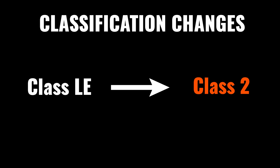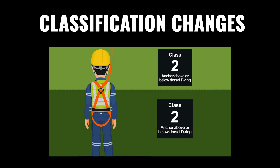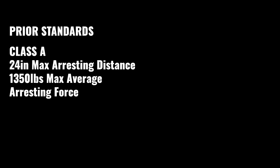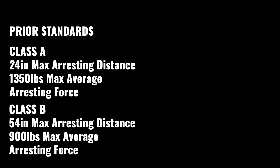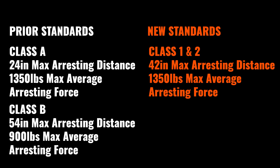Class 2 is formerly leading edge — for anchorage above or below your D-ring. The prior classes showed Class A with a 24-inch arresting distance and a maximum arresting force of 1,350 pounds, and Class B with a 54-inch arresting distance and 900 pounds arresting force or less. The arresting forces and arresting distance are now clearly labeled on the devices. The standard outlines maximum average arresting forces of 1,350 pounds and an arresting distance of 42 inches. However, manufacturers are now able to list their specific tested data directly on the manual, label, and all requirements. The maximum arresting distance allowed by the standard is a foot shorter than the previous Class B.